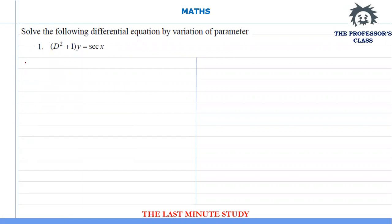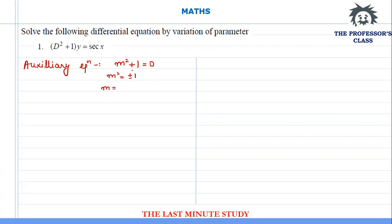The first step is going to be the same as in the previous question: finding the auxiliary equation. You can simply replace the D term with m and equate it to 0. So you get m² = -1, and m equals plus or minus i.